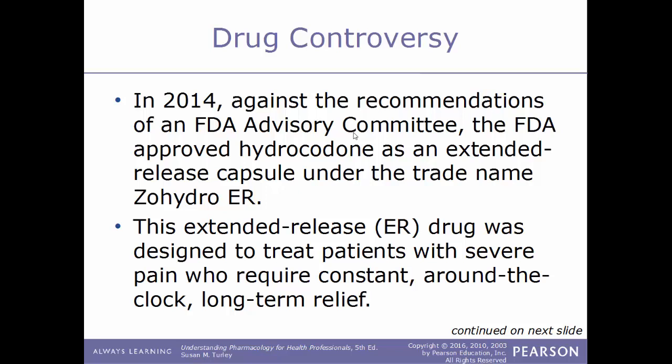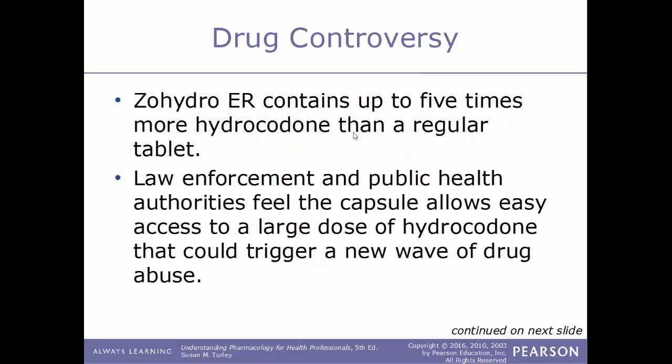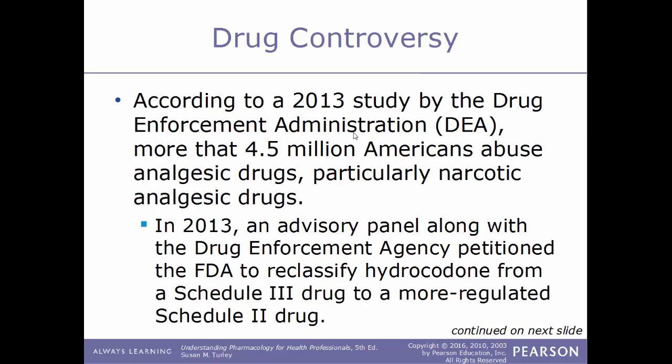A drug controversy: in 2014, against the recommendations of the FDA advisory committee, the FDA approved hydrocodone as an extended-release capsule under the trade name Zohydro ER. This extended-release drug was designed to treat patients with severe pain requiring constant, around-the-clock long-term care. Zohydro ER contains up to five times more hydrocodone than a regular tablet, so law enforcement and public health authorities feel the capsule allows easy access to a large dose that could trigger a new wave of drug abuse. According to a 2013 DEA study, more than 4.5 million Americans abuse analgesic drugs, particularly narcotic analgesic drugs. Also in 2013, an advisory panel along with the DEA petitioned the FDA to reclassify hydrocodone from a Schedule 3 to a more regulated Schedule 2 drug.